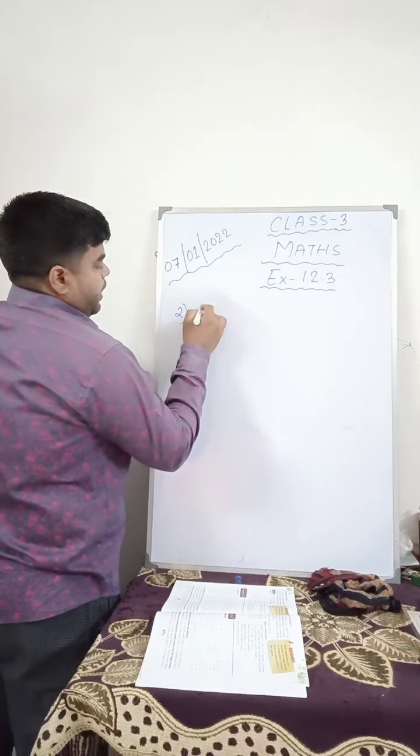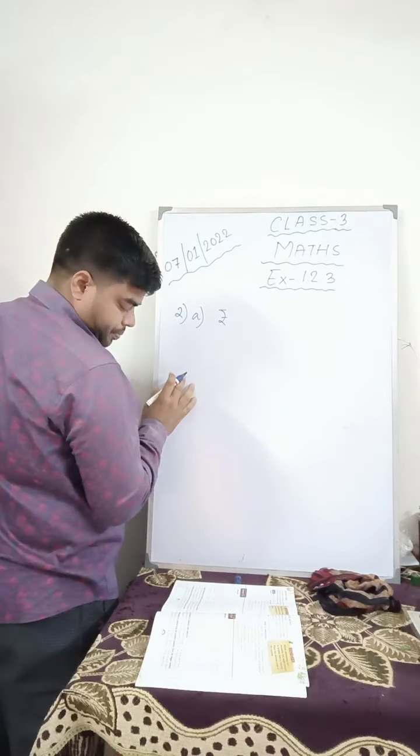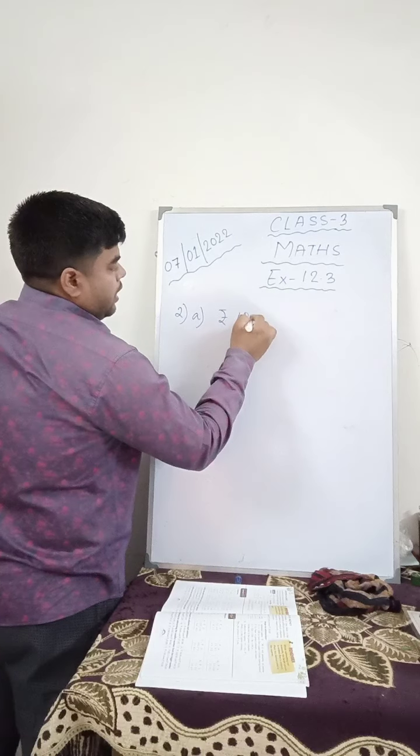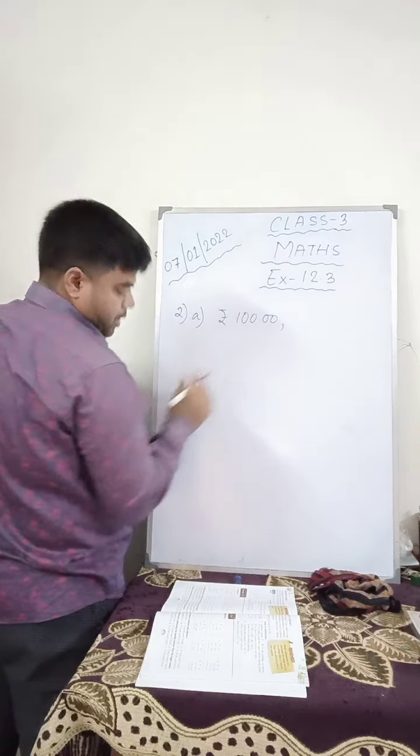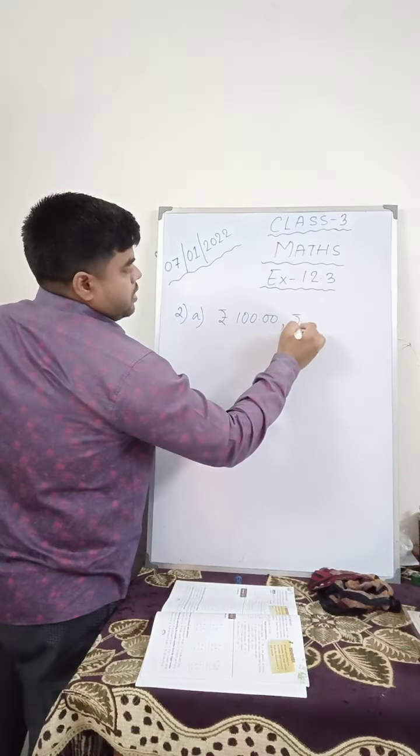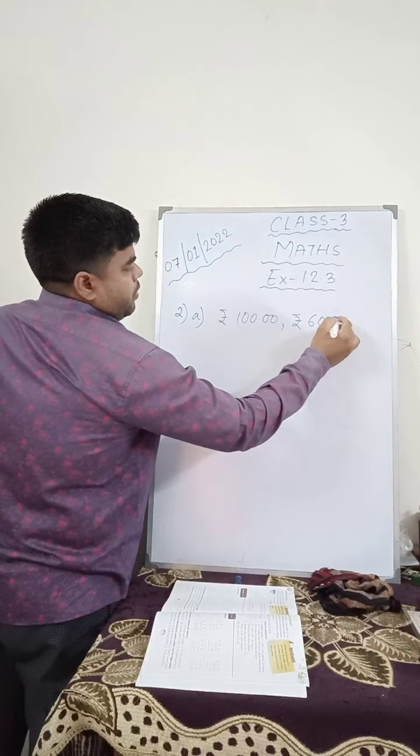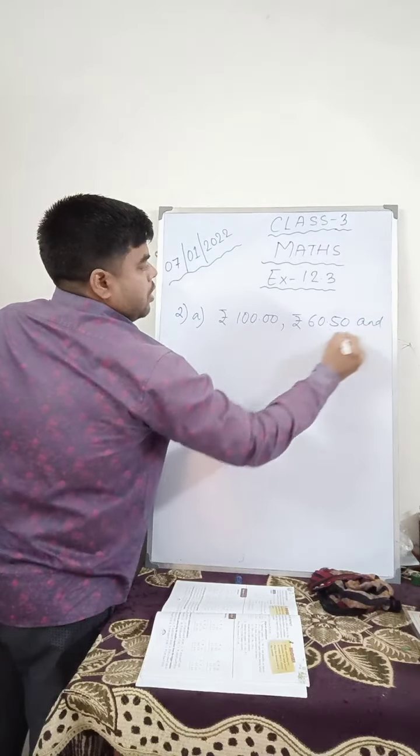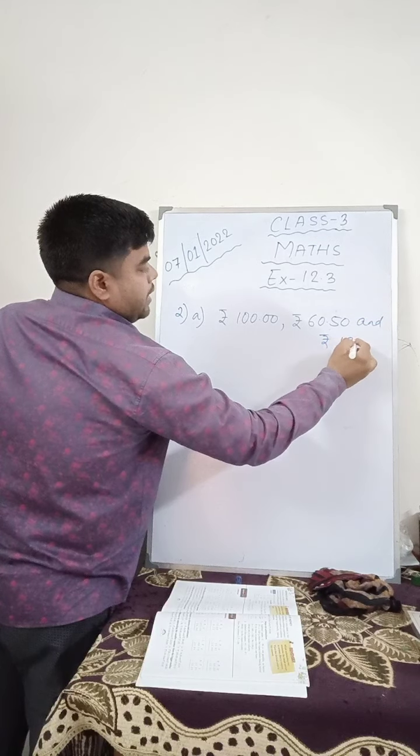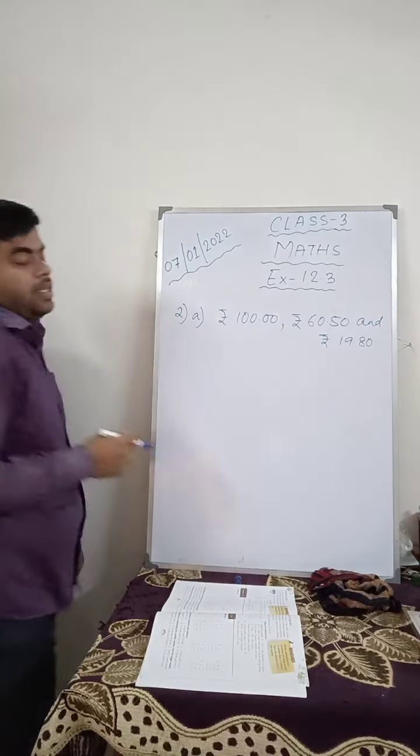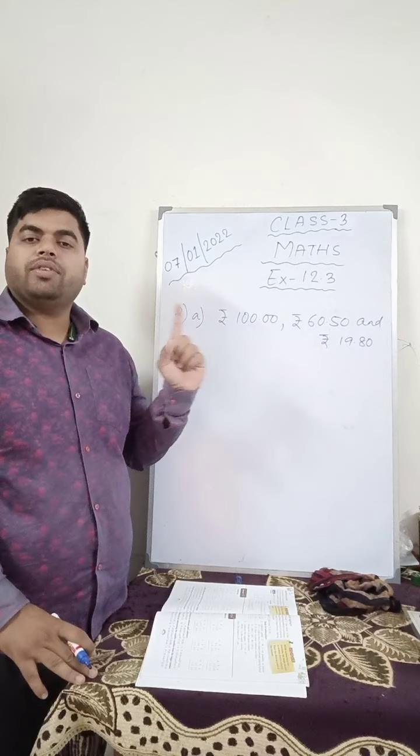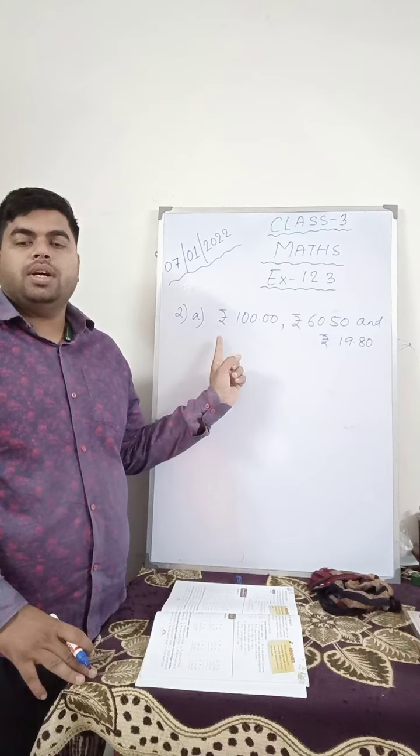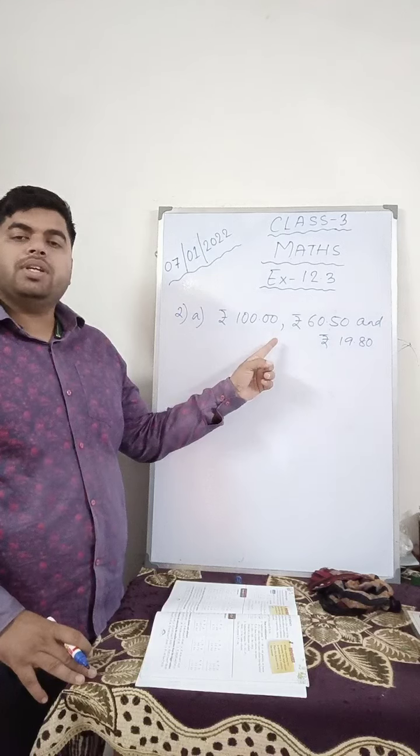Question number 2a: rupees 100.00, rupees 60.50, and rupees 19.80. This you have to add. In this you can see they have given you only one unit, that is rupees. But after the decimal, whatever is there, that is paisa.